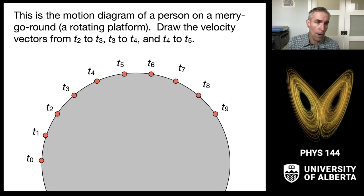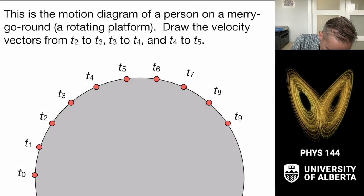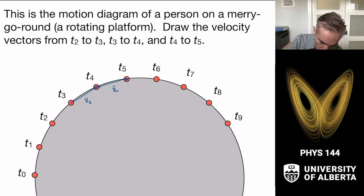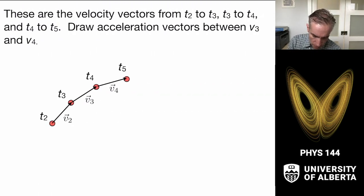As a graphical representation, I can draw the velocity vectors from t2 to t3 to t4 to t5. The velocity vectors are found by taking the vector that connects the initial to the final position. So the velocity vectors look like this — v2, v3, v4 — going along the trajectory.